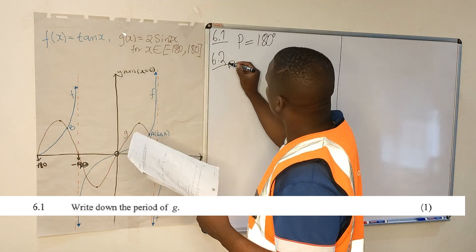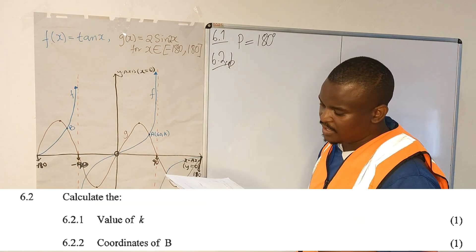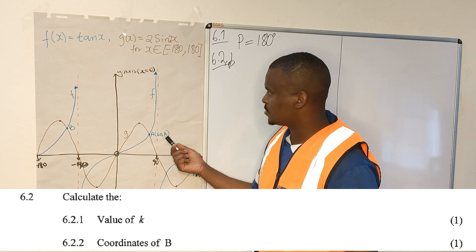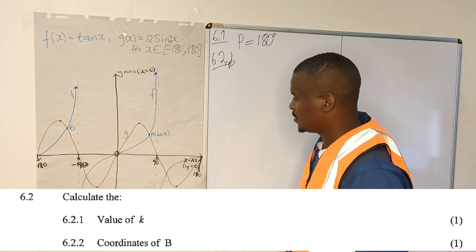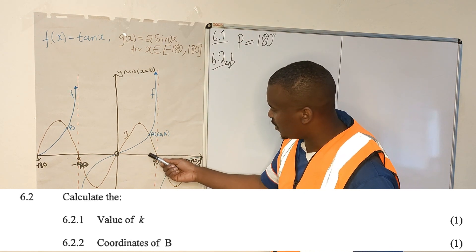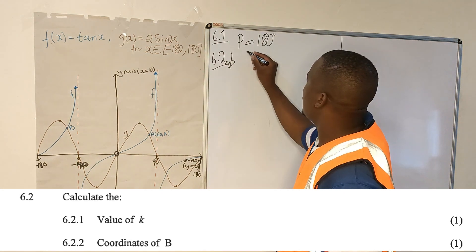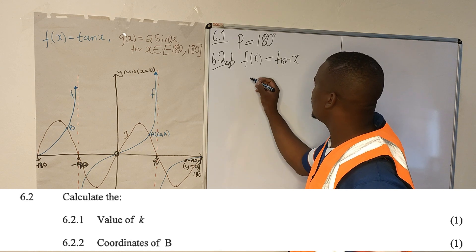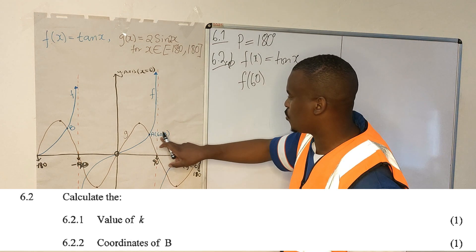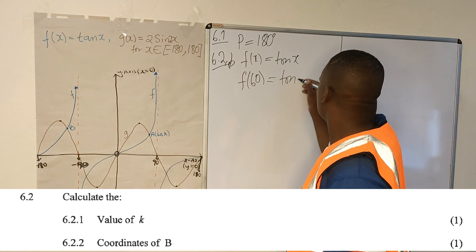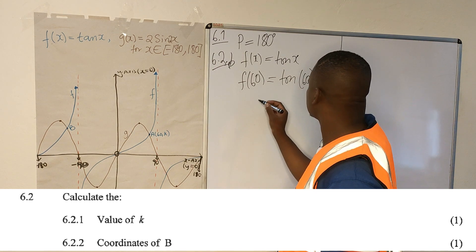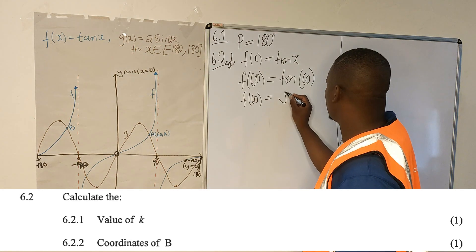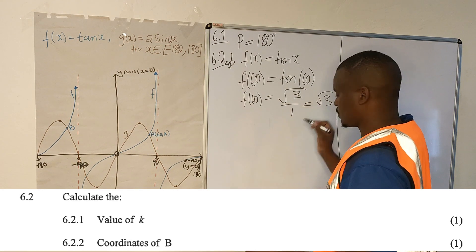6.2.1: Calculate the value of k. k is the y-value here. I'll use f of x equals tan x. You have f at 60 because you were given the x-value of 60 and you want the corresponding y-value. So it's going to be tan of 60 degrees. f at 60 is equal to a special angle — it's going to be square root of 3 over 1, which is square root of 3.